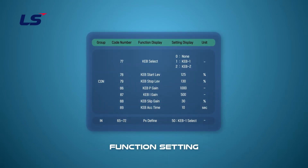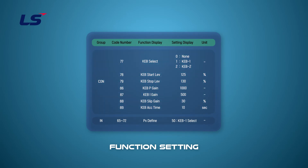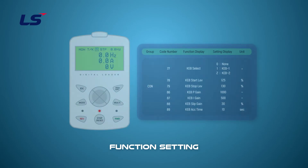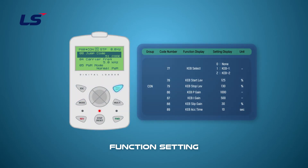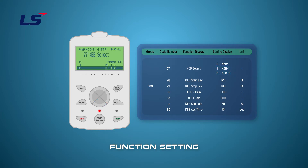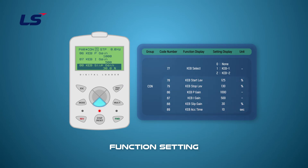Parameters related to KEB functions are from CON 77 to 89, and in IN-group 65 to 72 for multifunction input terminal settings. To operate energy buffering operation when the input power is cut off, select CON 77 as KEB1 mode (1) or KEB2 mode (2). However, if number 50 KEB1 select is set in the terminal block input function setting of IN-group, the setting of CON 77 cannot be changed from none because energy buffering operation is operated only by the terminal block input. Parameters from CON 78 to 89 appear only when CON 77 is set to a value other than none.